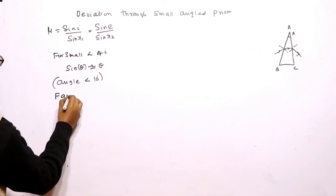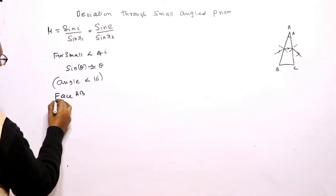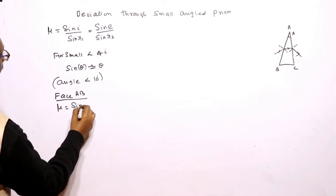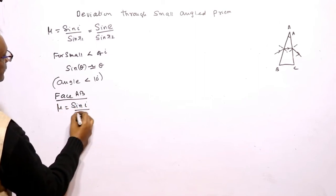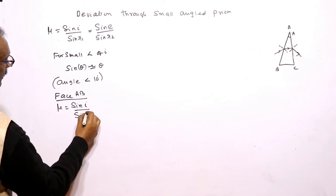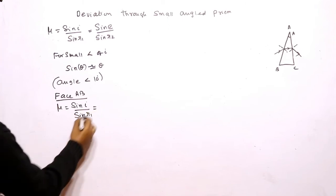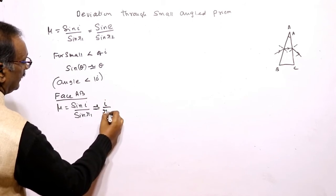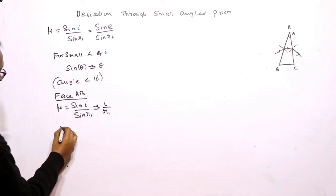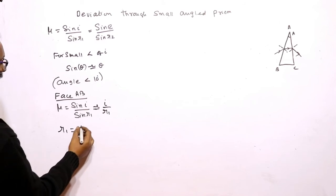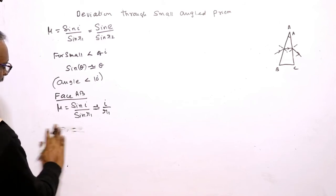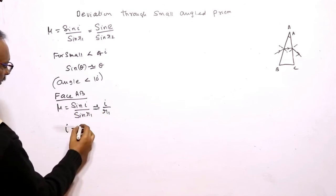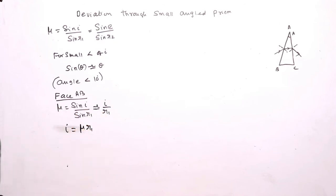For the face AB, mu is equal to sin I divided by sin R1, which is approximately equal to I divided by R1. Therefore, I is equal to mu into R1.